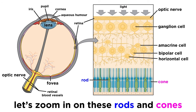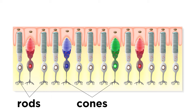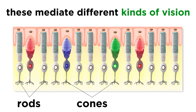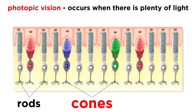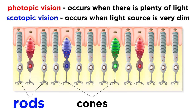Let's now get a closer look at rods and cones. Looking at their shapes, the origin of their names becomes quite obvious. They mediate different kinds of vision. Photopic vision is what happens when there is plenty of light, which allows us to perceive our surroundings in great detail — this is mediated by cones. Scotopic vision is what happens when things are very dim and there is not enough light to excite the cones — this is mediated by rods, and it produces a kind of perception that lacks certain details.